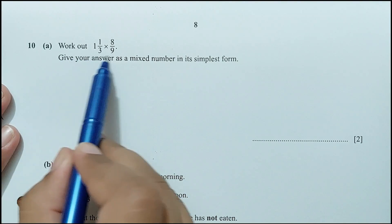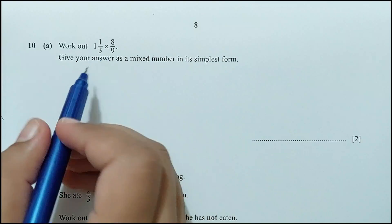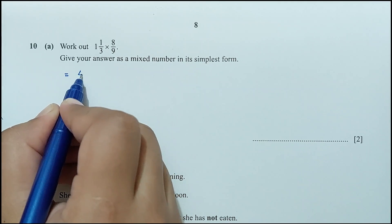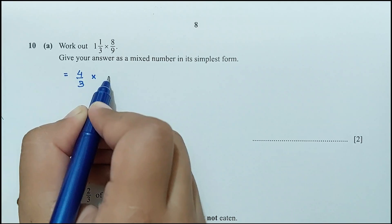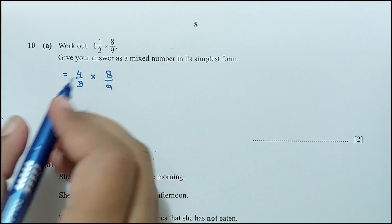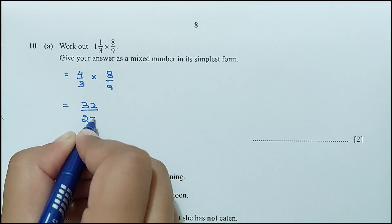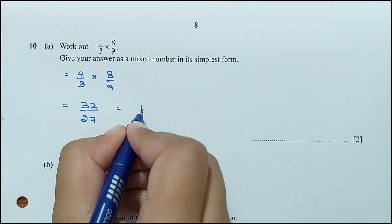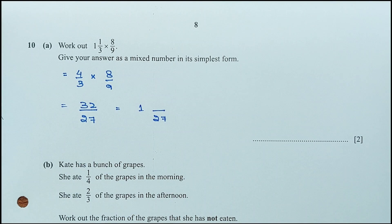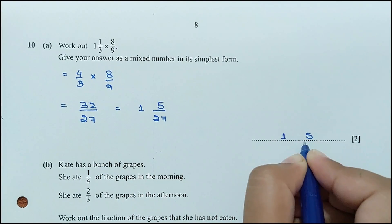Question 10 part A: work out 1⅓ × 8/9, giving your answer as a mixed number in simplest form. Converting the mixed number: 1⅓ = 4/3. So 4/3 × 8/9 = 32/27. Converting to a mixed number: 27 × 1 = 27, and 32 − 27 = 5, giving 1 and 5/27.